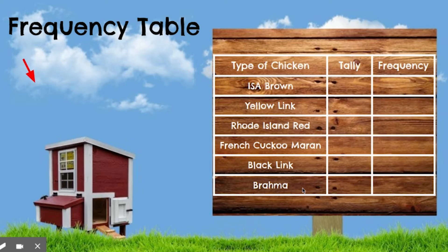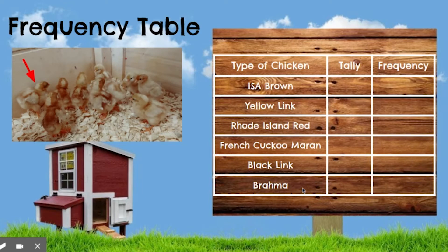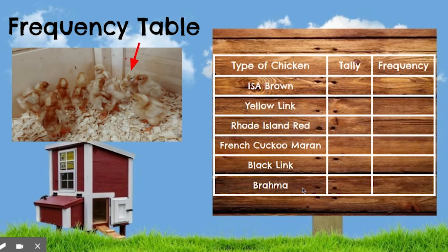Here we go. Here are the baby chicks we just got. These are the ISA brown chickens. We'll count: one, two, three, four, five, six, seven — this one's facing sideways and blends in with the background — eight, nine, and ten. One of them is named Nugget. So those are the ISA brown chickens. Hopefully you have a tally mark for each one of those.